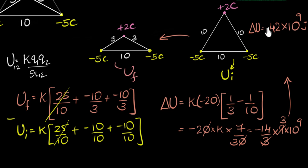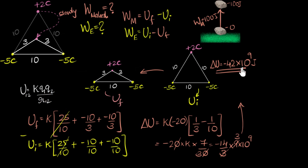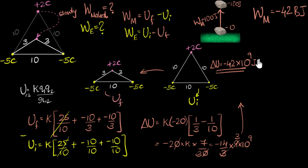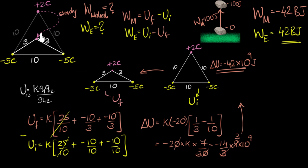Therefore the work done by me is minus 42 billion joules. And the work done by the electric field is the opposite of that — plus 42 billion joules. By the way, this is only true because I'm slowly moving it without any acceleration — I forgot to mention that in the question. That's important: that's why the total work done is zero, because there is no acceleration and no change in kinetic energy.